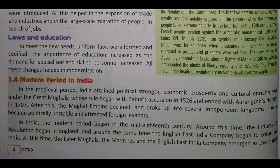After this, the Mughal empire declined and broke up into several independent states. In India, the modern period began in the mid 18th century. The industrial revolution began in England around the same time, and the English East India Company began to colonize India.